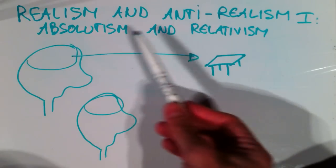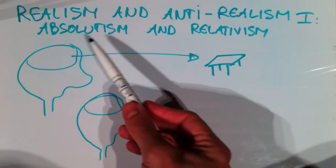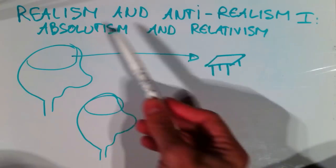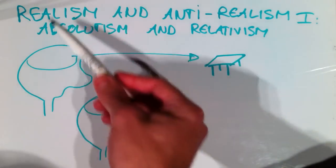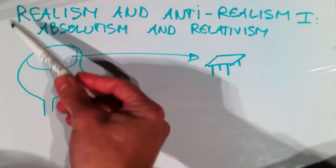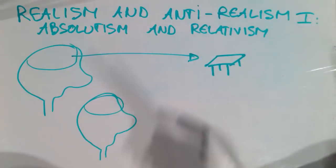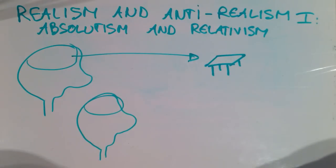Relativism is, of course, opposed to absolutism. So realism, in a sense, is an absolutist philosophy. So this is what we're going to talk about.